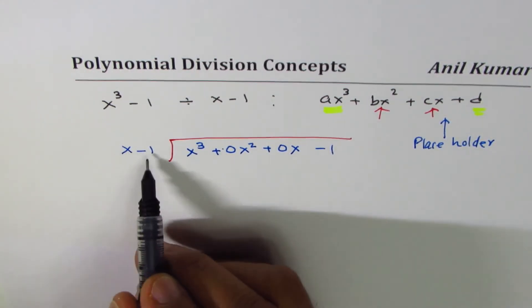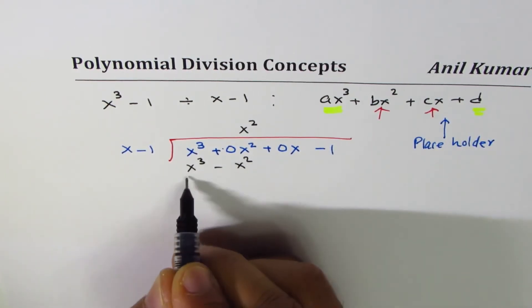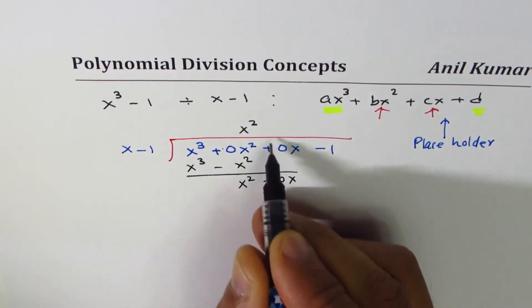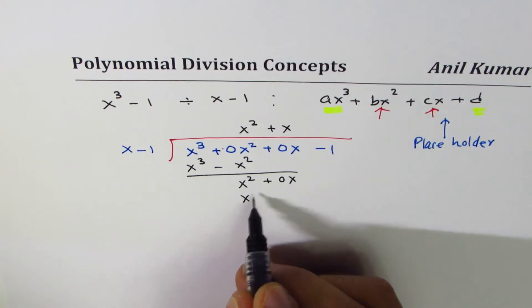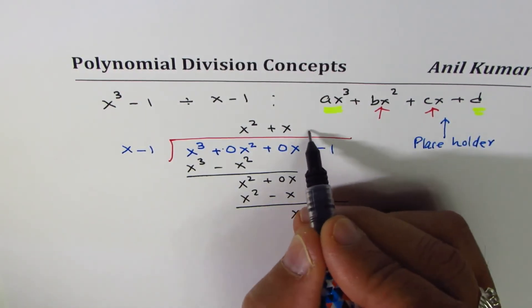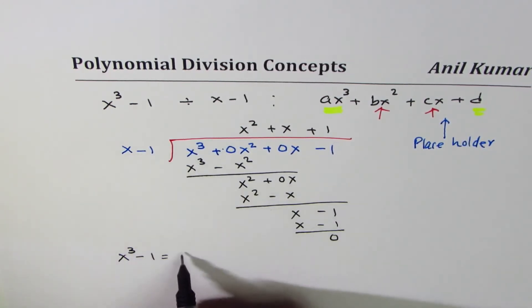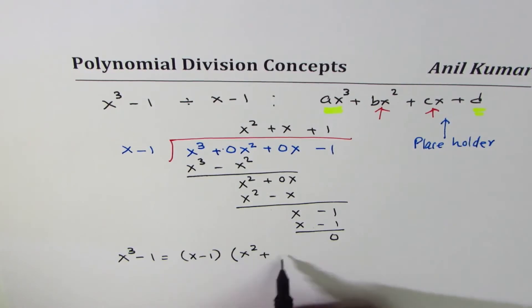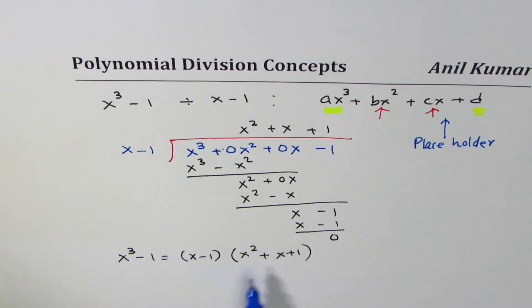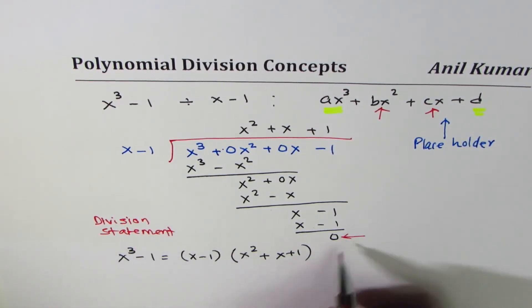The process is the same. We multiply by x squared to get x cubed minus x squared. Taking away, we get x squared plus 0x; bring it down. Multiply by x: x squared minus x; subtract to get plus x; bring down minus 1. It goes one time: x minus 1, and the remainder is 0. Since remainder is 0, x minus 1 is a factor. So we write: x cubed minus 1 equals (x minus 1)(x squared plus x plus 1). That is the division statement.